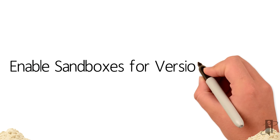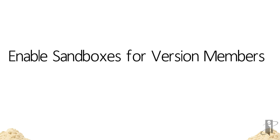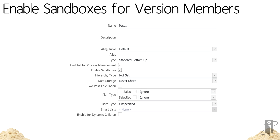When building the version dimension, we'll need to check the Enable Sandboxes box in each version member we would want users to create sandboxes for. This image shows the member properties for the Past One version member with Enable Sandboxes checked.